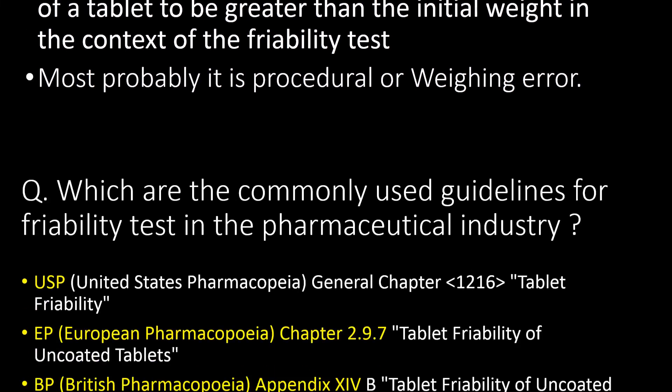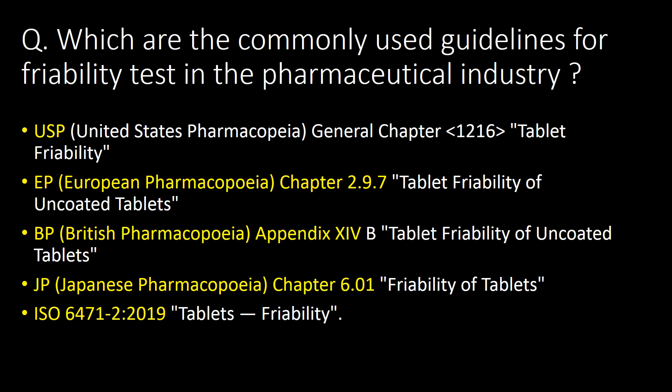Which are the commonly used guidelines for the friability test in the pharmaceutical industry? Following are five very commonly used guidelines: pharmacopoeia and ISO guidelines are very commonly used for the friability test, out of which USP chapter number 1216 is the most preferred one.